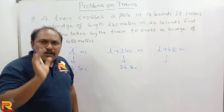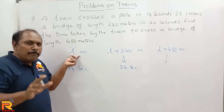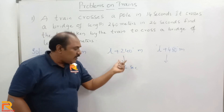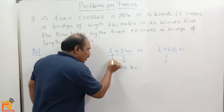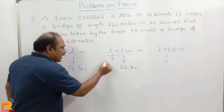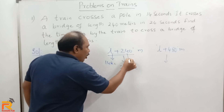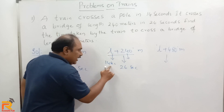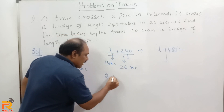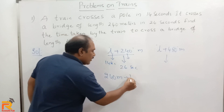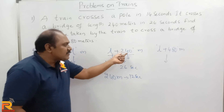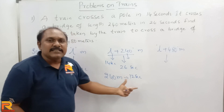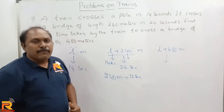Now let's analyze carefully. L meters takes 14 seconds. L plus 240 takes 26 seconds. In those 26 seconds, we already know that L meters takes 14 seconds. So the train will travel 240 meters in 26 minus 14, which is 12 seconds. The train takes 12 seconds to travel 240 meters.